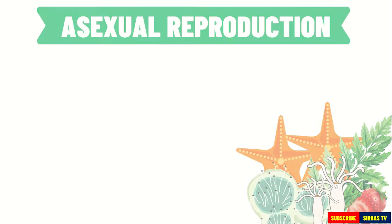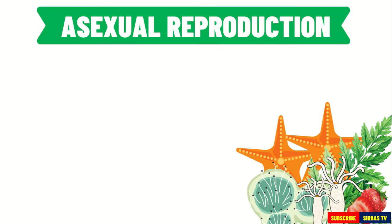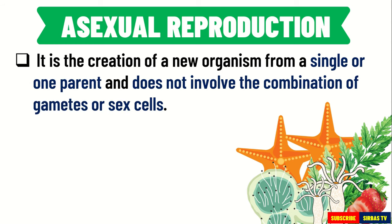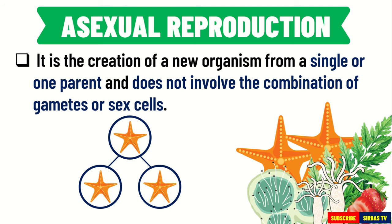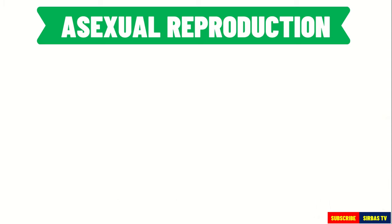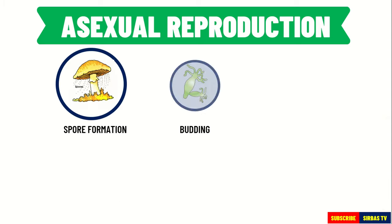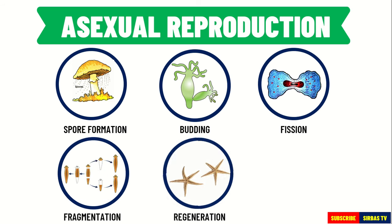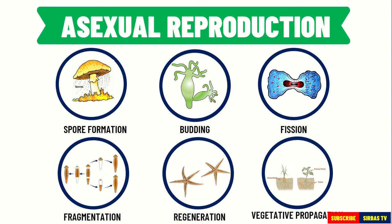You already know that asexual reproduction is a type of reproduction that involves only one parent. Since there is only one parent involved, the resulting offspring is exactly alike with its parent. There are six types of asexual reproduction: spore formation, budding, fission, fragmentation, regeneration, and vegetative propagation.